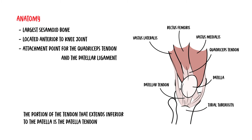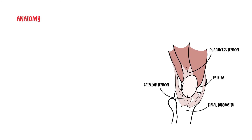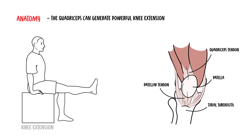Some texts refer to it as the patella ligament. The combined action of the quadriceps can generate powerful knee extension, and this is in part due to the help of the patella tendon, obviously attaching to the tibia.